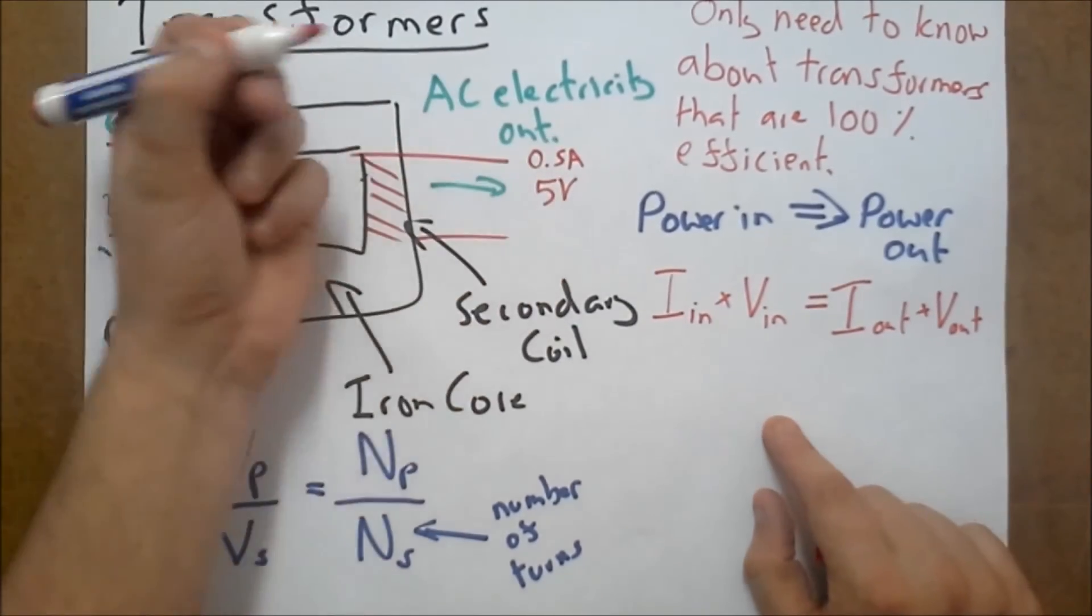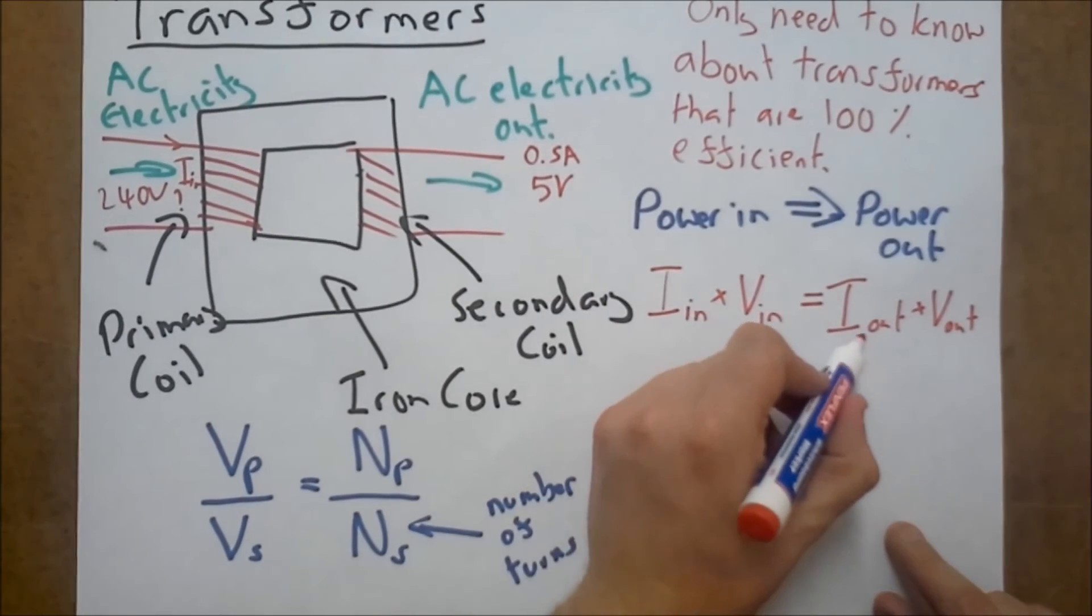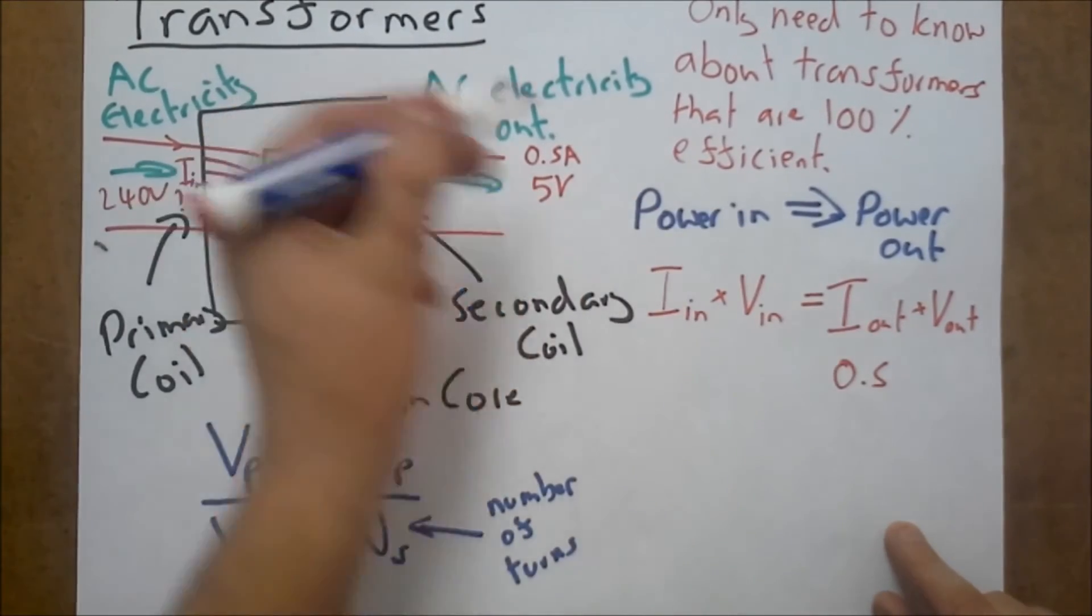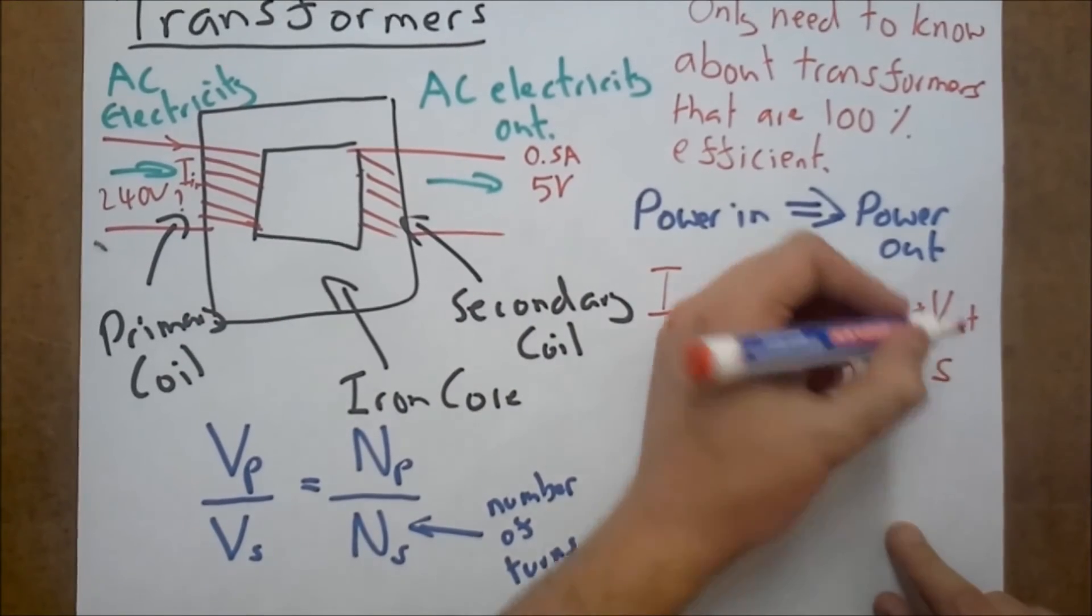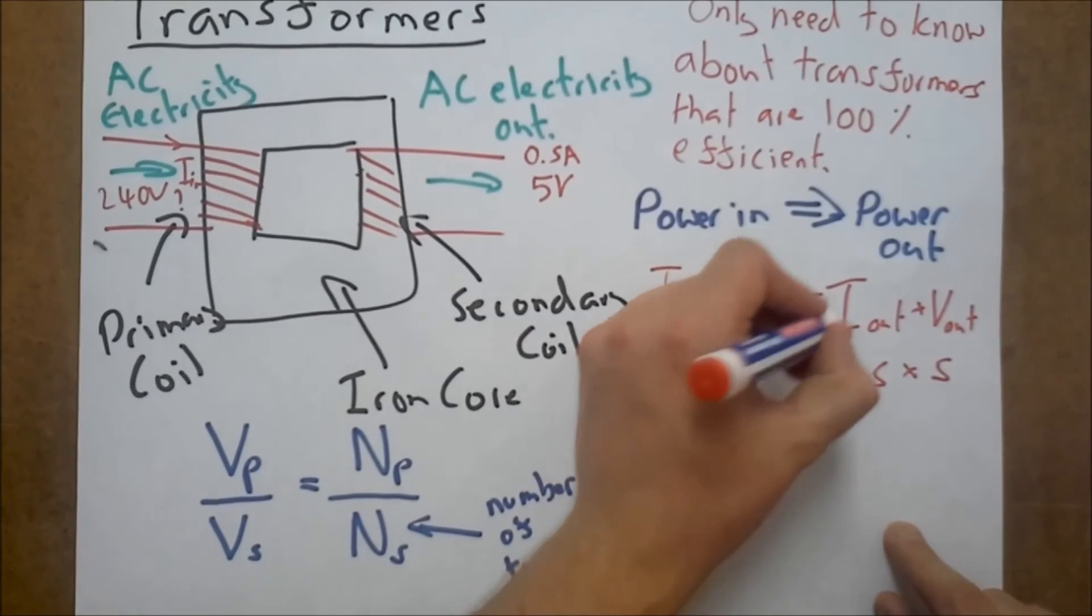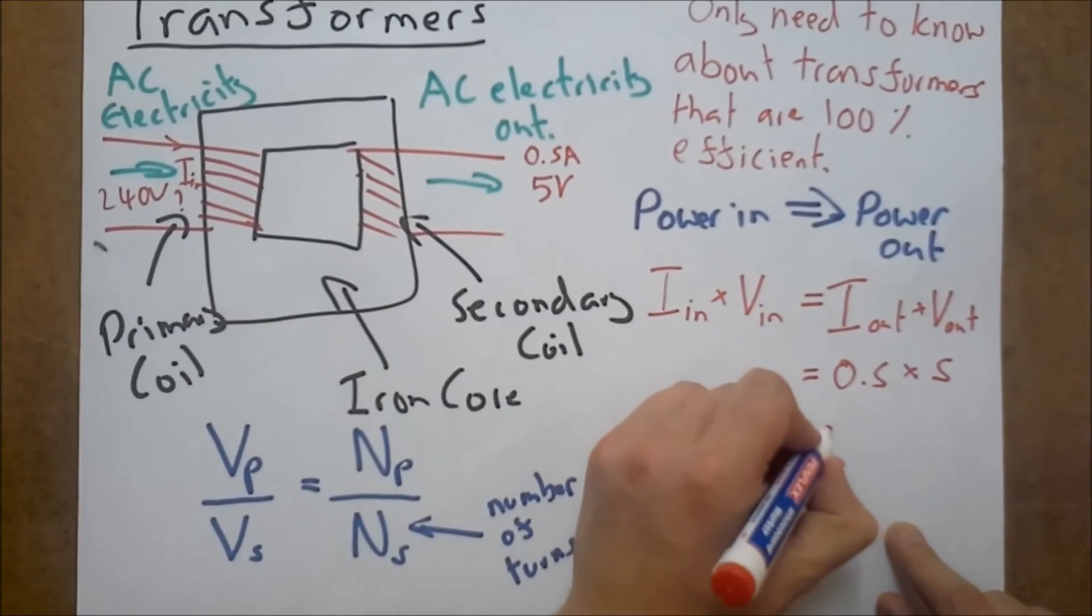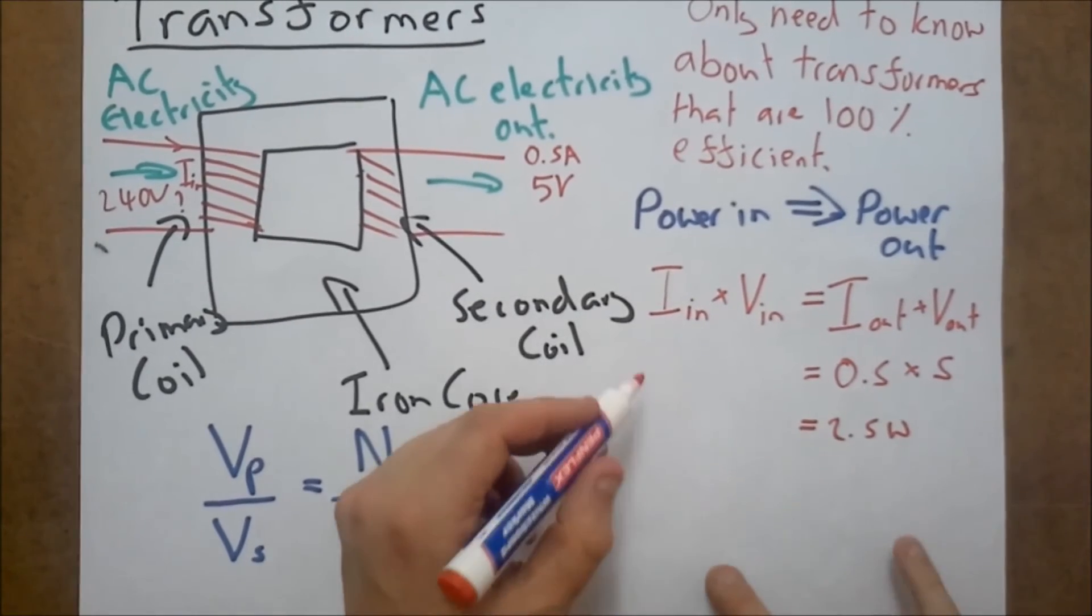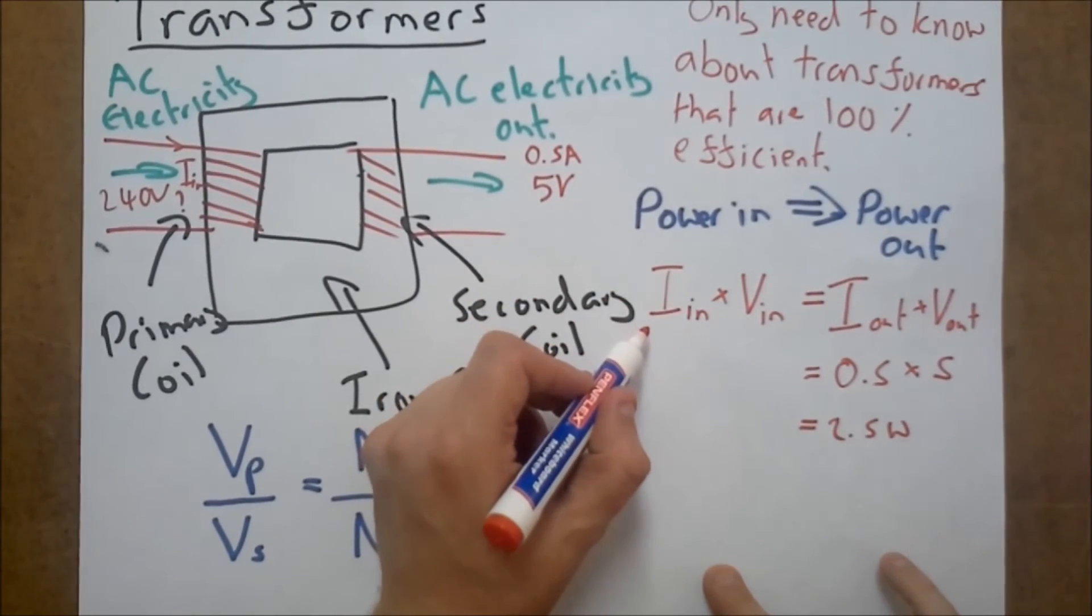So coming out we've got 0.5 amps and we've got five volts. So what's the total power coming out here? Well the total power coming out is going to equal 2.5 watts.